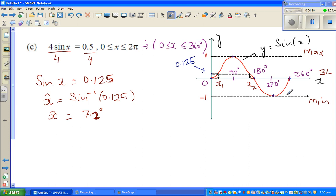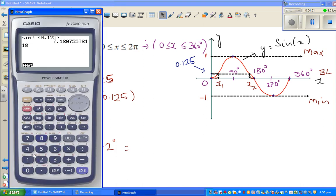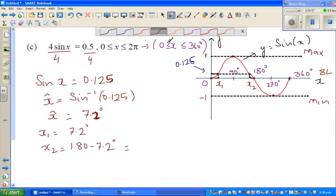So x1 is 7.2 degrees, and x2 for the second angle is 7.2 away to the left of 180, which is nothing but 180 minus 7.2 degrees. Let me use a calculator: 180 minus 7.2 is 172.8. So the other angle is 172.8.